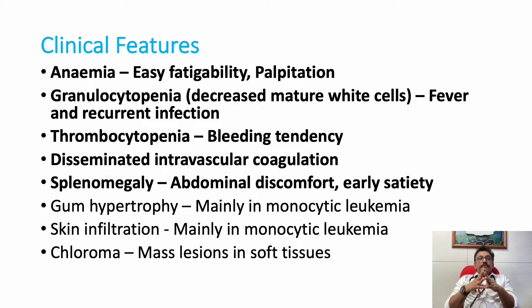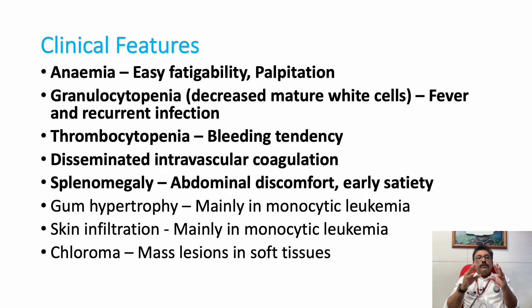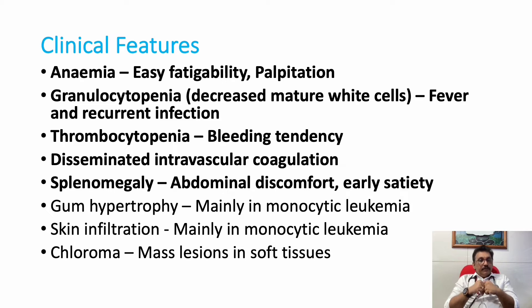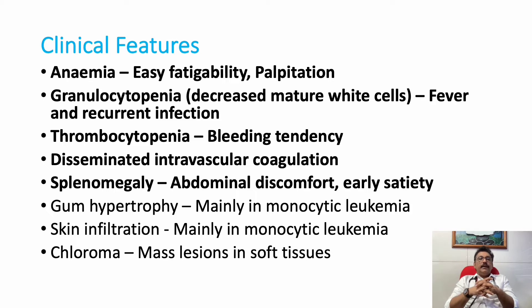The clinical features of AML: anemia is the most important clinical feature because the bone marrow is full of immature myeloid cells, so production of RBCs is reduced. The patient can have fatigue, palpitation, cardiac failure, and edema — many features of anemia can be present.